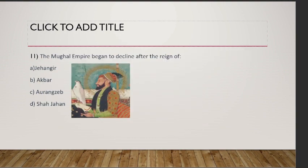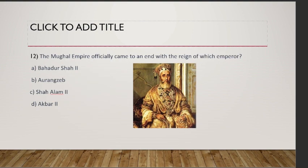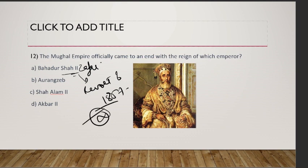The Mughal Empire began to decline after the reign of Aurangzeb. The Mughal Empire officially came to an end with the reign of which emperor? Bahadur Shah Zafar — Bahadur Shah II. After the Revolt of 1857, the Mughal Empire was finished and the British took over.